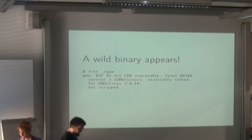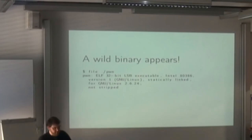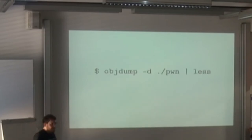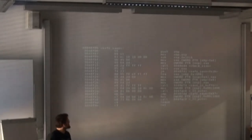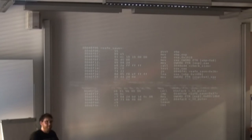Let's suppose a wild binary appears. This is very common during CTFs — you just get thrown a binary with no source code, no debugging symbols. If you're lucky you know where the functions are and what they're called, but that's rarely the case. If you've developed in C or C++, you've probably seen something like this: objdump, part of the binutils — you can disassemble stuff with that. Now this is just horrible. Nobody can see anything here. You can't debug a 10 megabyte binary with that — it's just crazy.